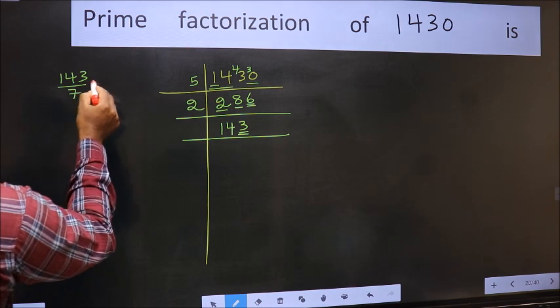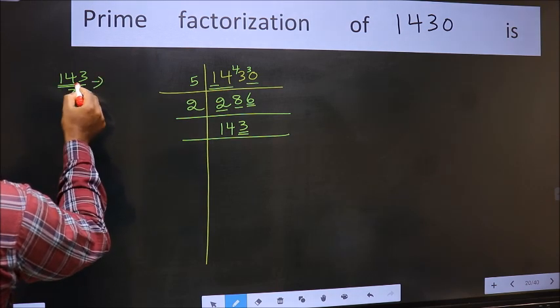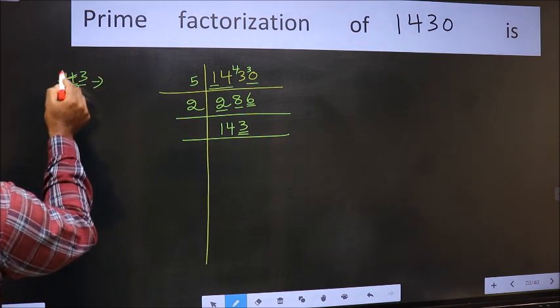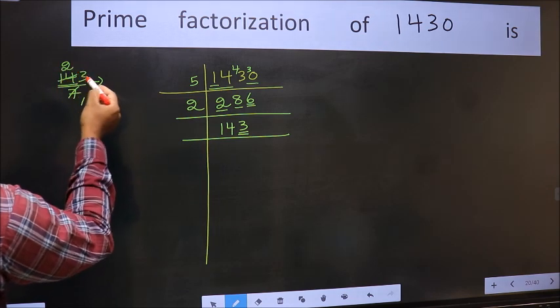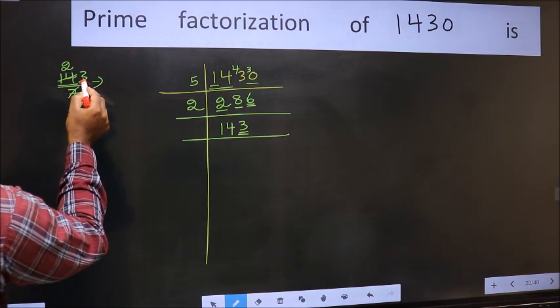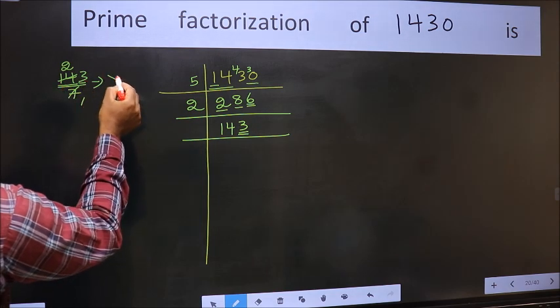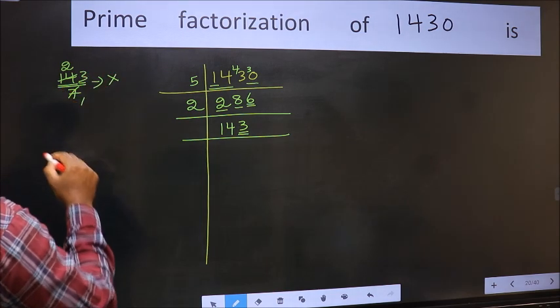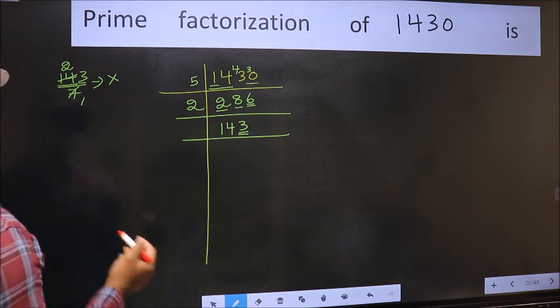143 divided by 7. When do we get 14 in 7 table? 7×2=14. When do we get 3 in 7 table? We don't. The number 3 has been left out, so this is not divisible by 7. Next prime number 11, let us check divisibility by 11.